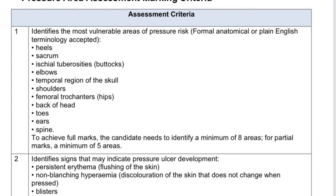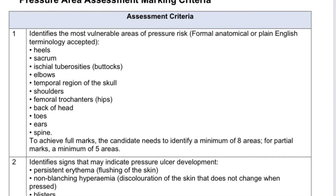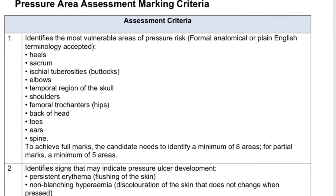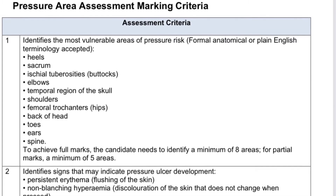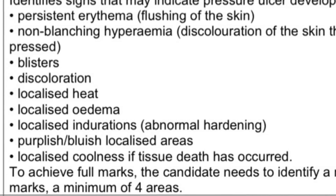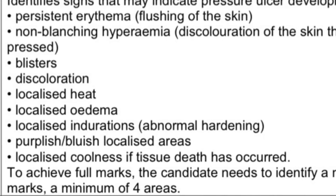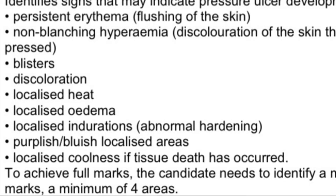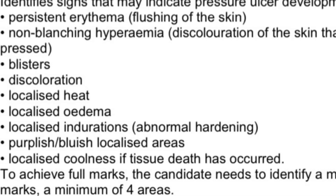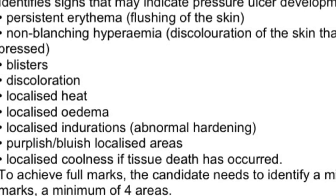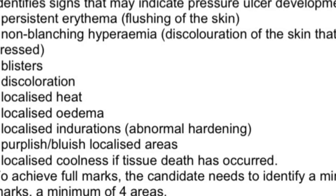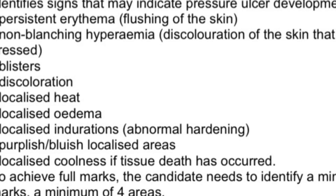The next important step is to identify signs that may indicate pressure ulcer development. The first sign is persistent erythema — that is flushing of the skin. The next is non-blanching hyperaemia, which means discoloration of the skin that does not change when pressed. Other signs include blisters and discoloration.